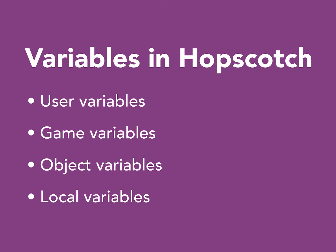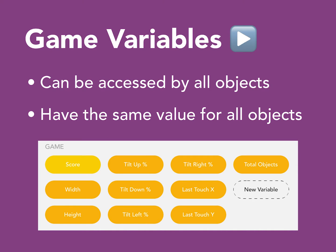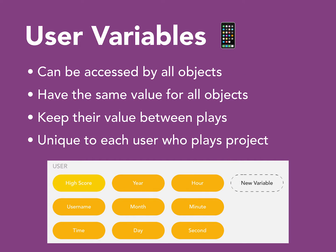These are user variables, game variables, object variables, and local variables. Game variables have values that can be accessed by all objects in the game, and they are the same value for all objects. User variables are game variables that keep their values between plays of a project and are unique to each user who plays the project.